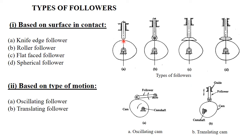The knife edge follower has a knife edge, so when the cam comes in contact with it, there is a line contact and it traces precisely the surface of the cam, giving accurate follower motion. However, because of the knife edge, it drops on the cam surface and eventually the surface deteriorates, losing accuracy. Therefore, the knife edge follower is generally avoided.